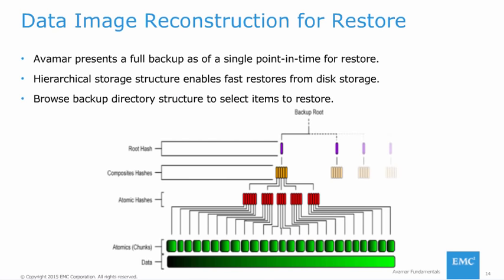For restore, Avamar presents a full backup as a single point in time. Each backup has its own root hash linking to the data objects and hashes which comprise the specific backup at the point in time when the backup occurred. For a restore initiated by Avamar Administrator, MCS contacts Avagent on the applicable clients. Avagent starts Avtar, and Avtar connects to GSAN on the Avamar server. GSAN processing locates the chunks necessary to fulfill the restore request and sends the chunks to the Avtar process running on the clients. The chunks are collected in the client's memory, ordered, uncompressed, and then written to disk on the client.